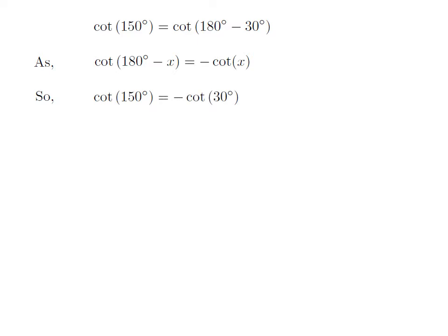Let us apply the above identity for cotangent of 150 degrees. Here x is 30 degrees, so cotangent of 150 degrees is equal to minus cotangent of 30 degrees.